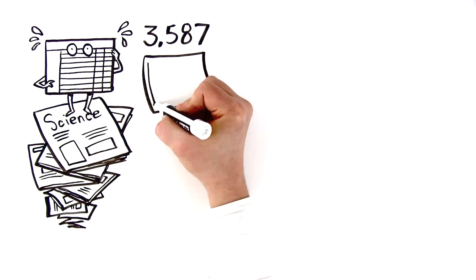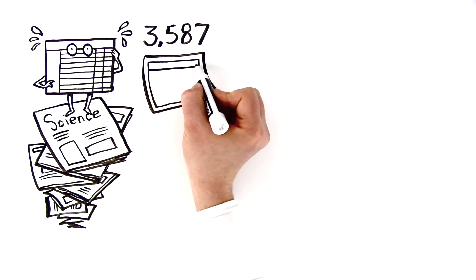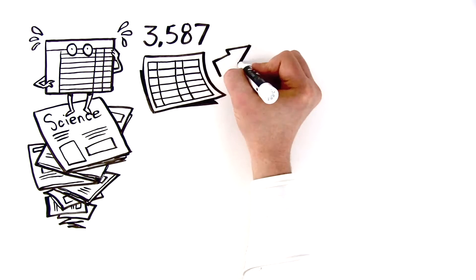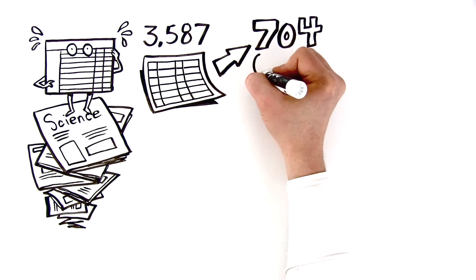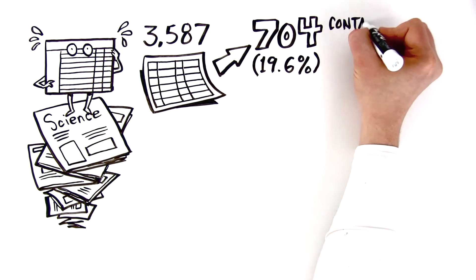found 3,587 papers published with spreadsheet files containing gene lists. And of those 704, a whopping 19.6% contain gene name errors.